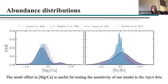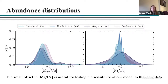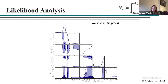Here I'm showing the abundance distribution of these elements for the four different samples. They're broadly consistent with one another, but there is a small offset in the magnesium-to-calcium abundances in the 2014 sample compared to the others. While this offset is only around 0.1 dex, it does have an impact on the inferred enrichment model parameters, making it useful for testing the sensitivity of our model to the input data.